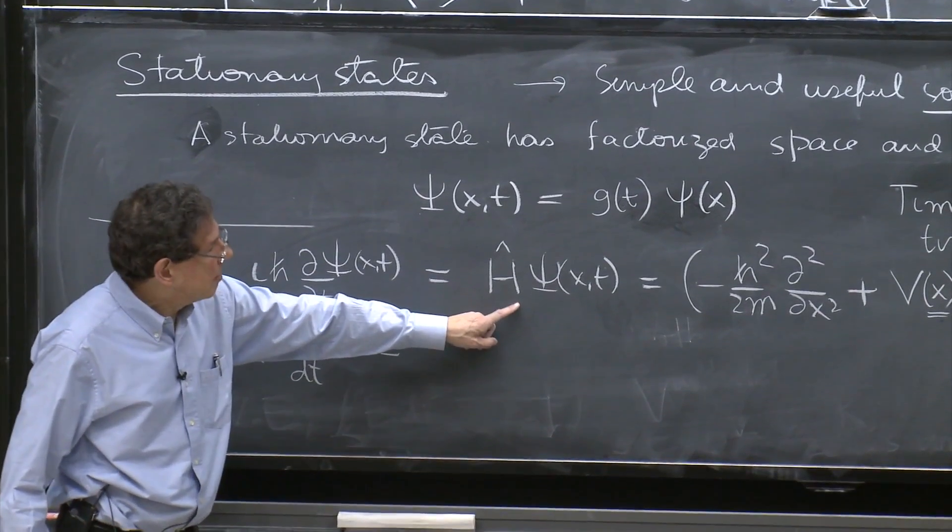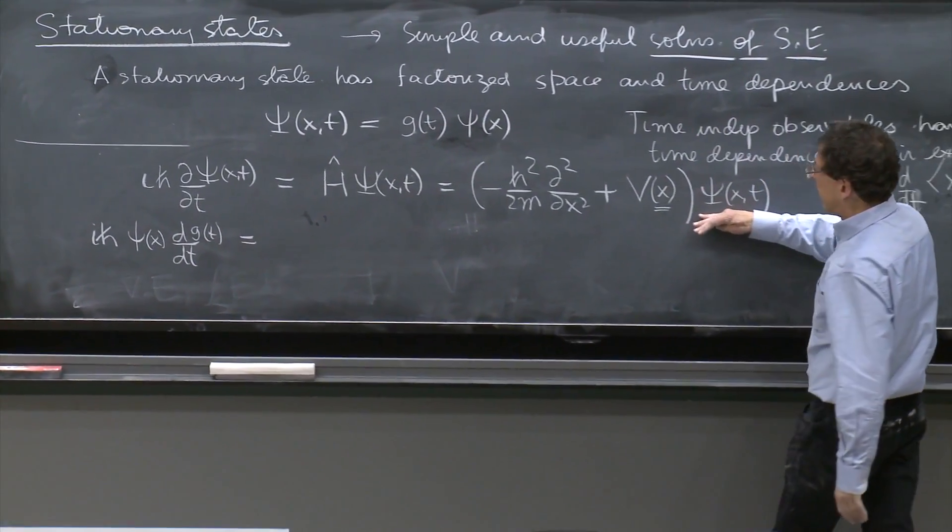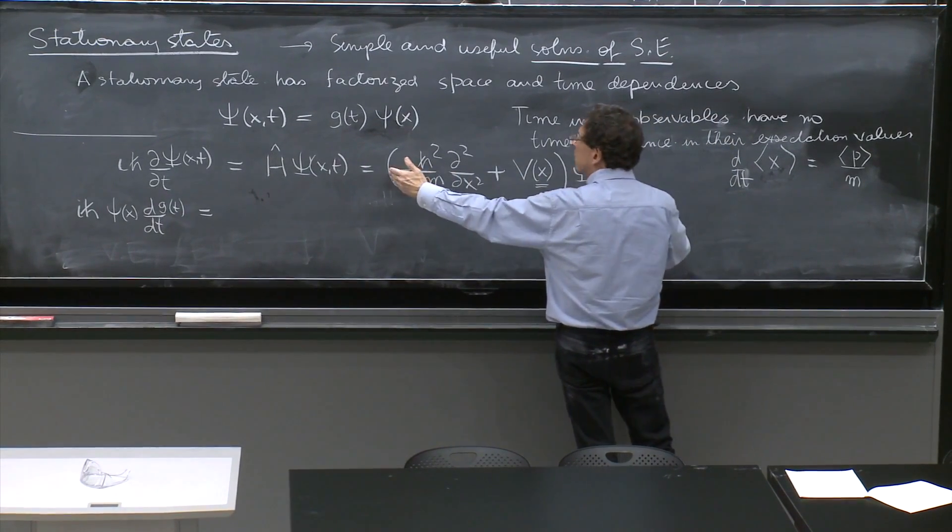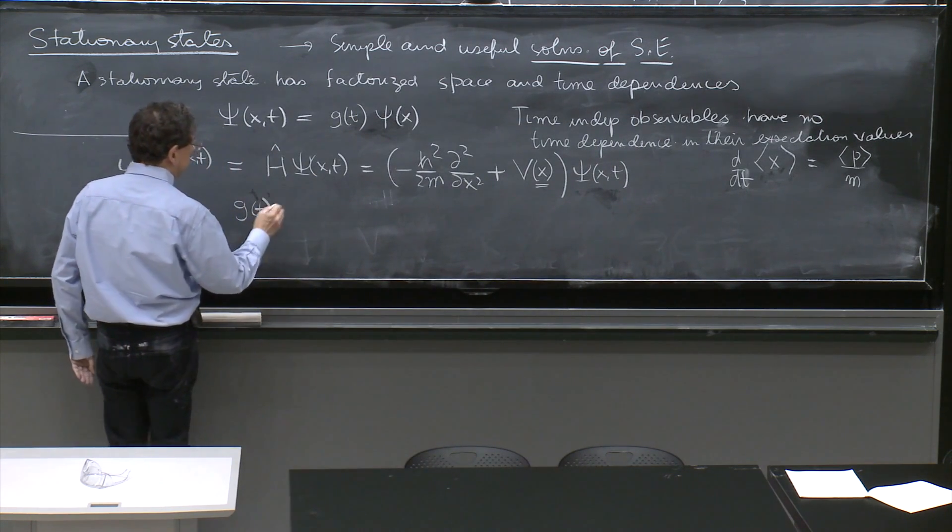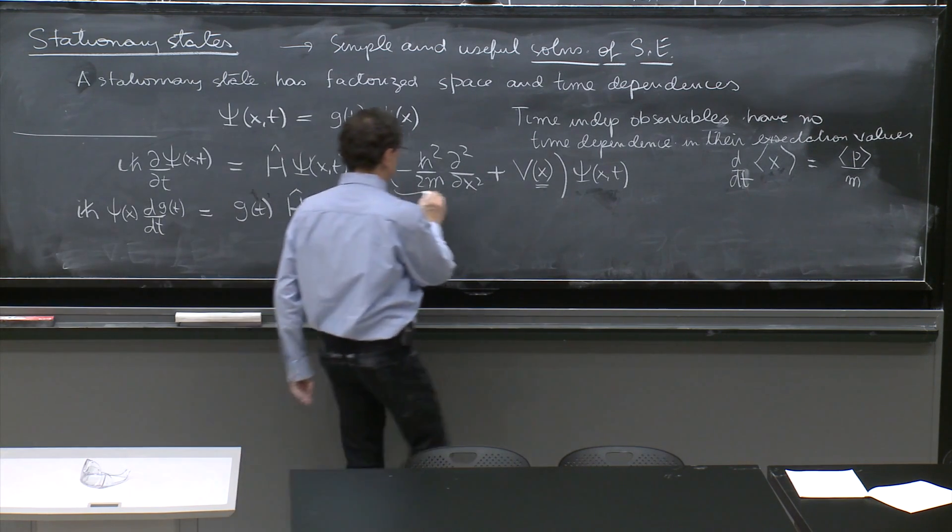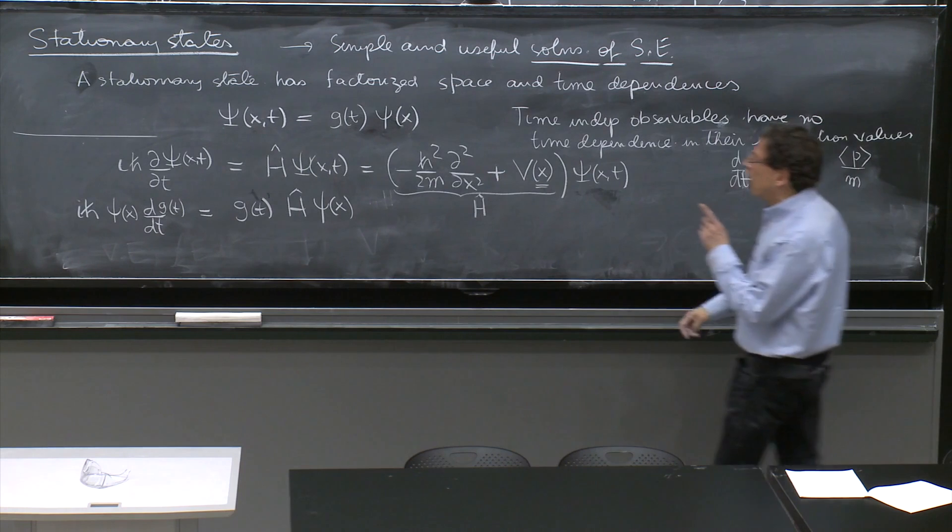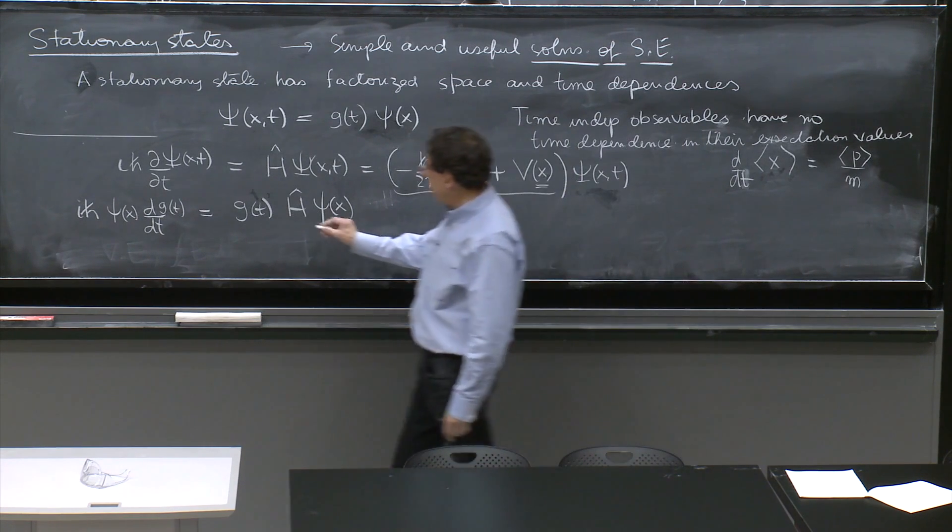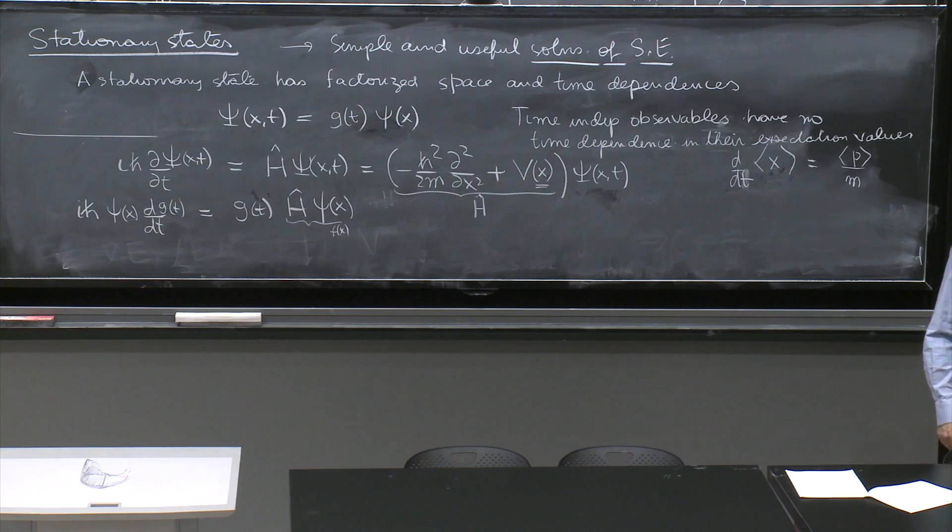And now, this factor H-hat of psi acts on these two things. The function of time times the function of x sitting here. Well, the function of time can be moved out. So the function of time can be moved across the Hamiltonian operator. It doesn't do anything to it. So we'll have g of t times H-hat on psi of x. This is H-hat. And because we had no time dependence in the potential, this whole thing is a function of x.